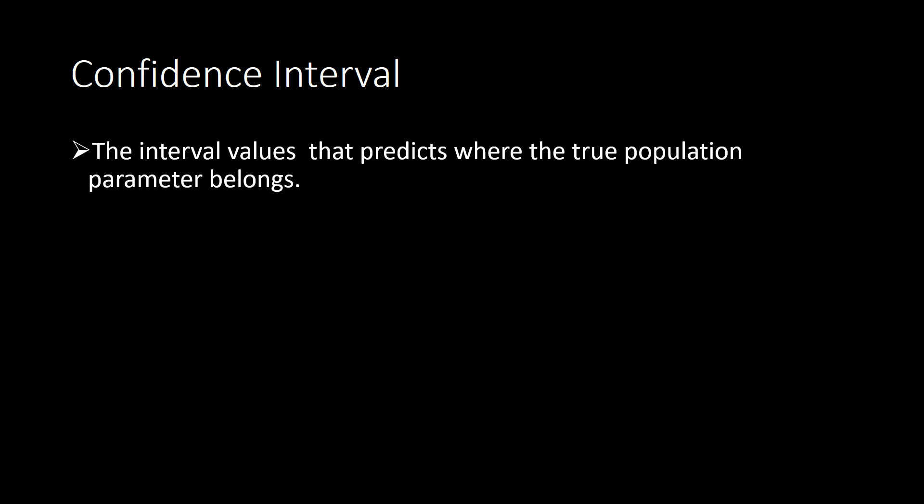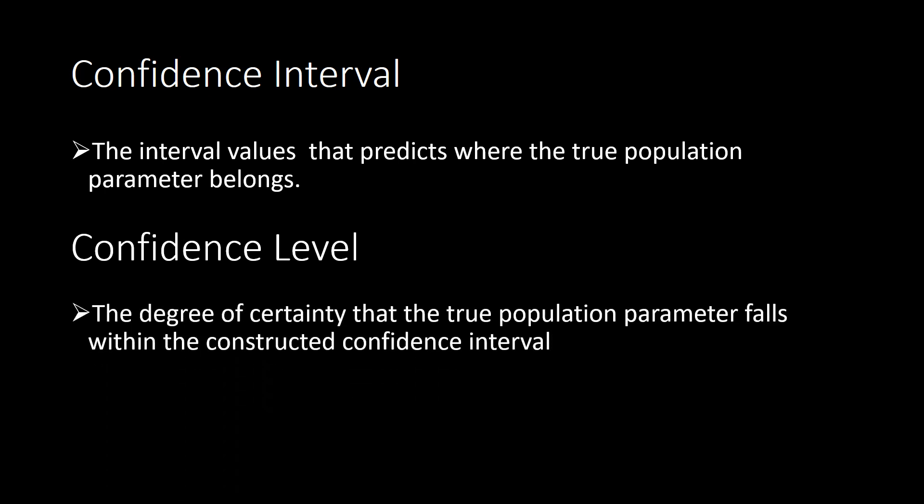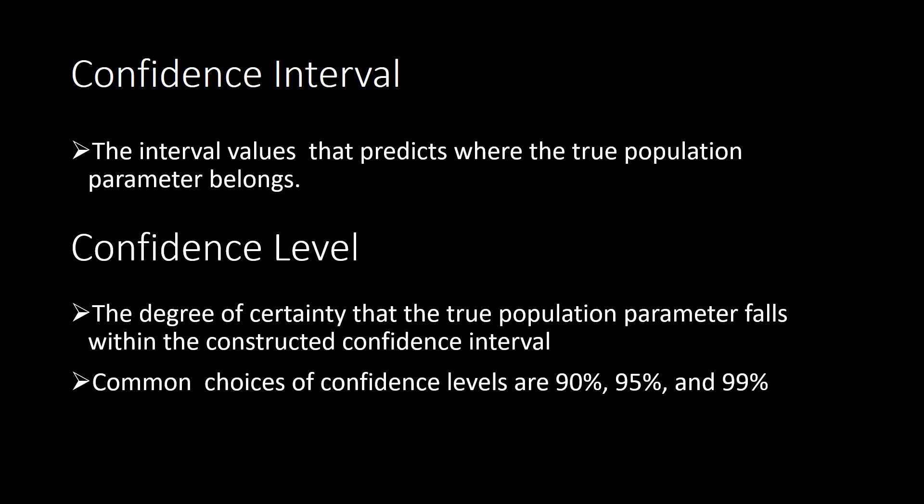Confidence interval goes along with the term confidence level. Confidence level is the degree of certainty that the true population parameter falls within the constructed confidence interval. For example, a confidence level of 90% means you are 90% sure the true population parameter lies within that range. The most commonly used confidence levels are 90%, 95%, and 99%.